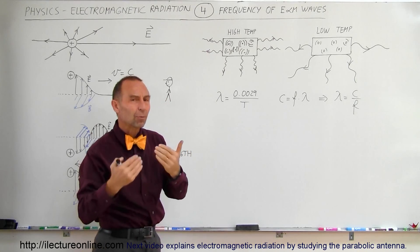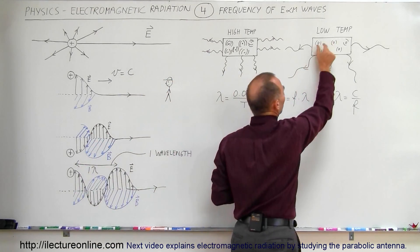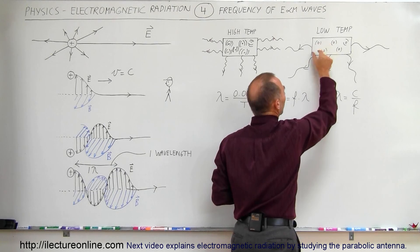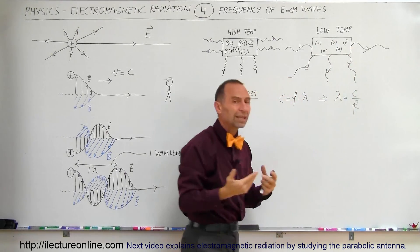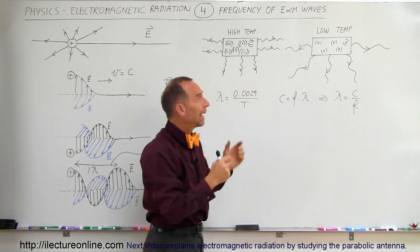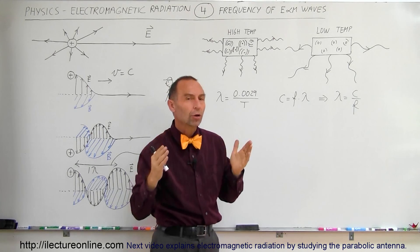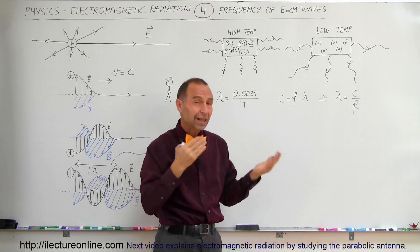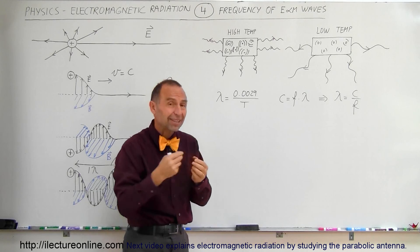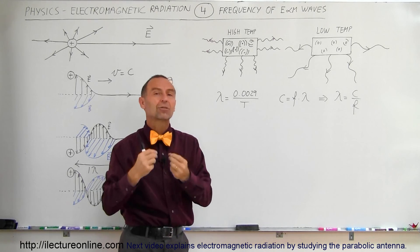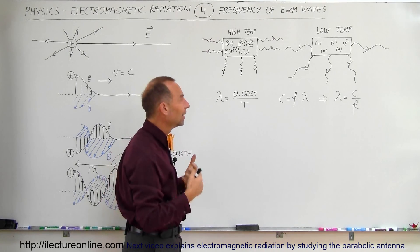An object that is much cooler — the atoms inside the object will vibrate more slowly, the frequency of the radiation will accordingly be slower, and the wavelengths of the radiation will accordingly be longer. So we realize that there is a relationship between the temperature of objects and the kind of electromagnetic radiation that emanates from them.